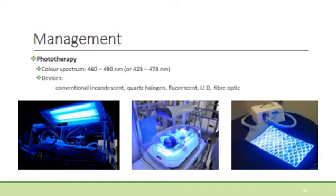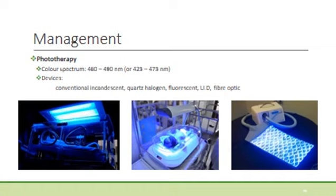During phototherapy, a specific colour spectrum is targeted as these wavelengths best penetrate the skin and cause the necessary changes in the bilirubin molecule. The colour spectrum most commonly used is the blue-green spectrum in the 460 to 490 nanometre wavelength group. Devices include conventional incandescent lights, quartz halogen lights, fluorescent lights, LED or fibre optic. Phototherapy can be delivered from overhead or placed underneath the baby as seen with a bilirubin blanket. For very severe jaundice, double or triple phototherapy uses both overhead and underneath routes simultaneously.